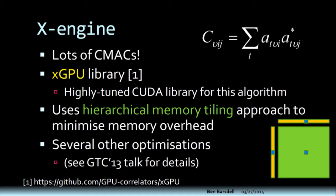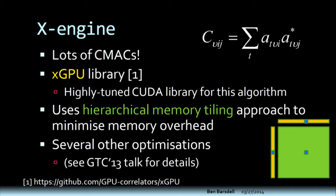Finally, the X-engine — this is where the heavy compute work is done. We're doing lots of complex multiply-accumulates. The equation can be written as shown in the top corner: it does an outer product and then sums over time, which is integrating over time. We used the XGPU library that essentially Mike wrote. It's highly tuned for the CUDA architecture and runs very well on Kepler and extremely well on Maxwell, it turns out. It uses a hierarchical memory tiling approach to minimize memory overheads, very similar to the way some of the BLAS libraries — DGEMM and so on — use similar approaches. There are many other optimizations, some of which were discussed in last year's talk.